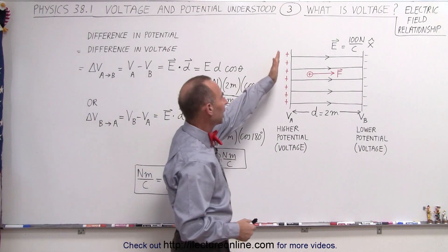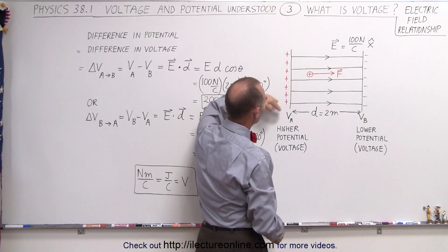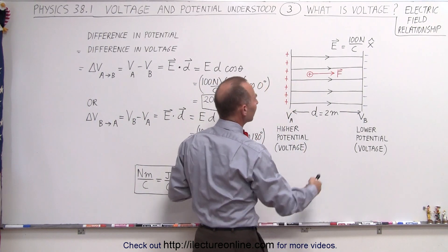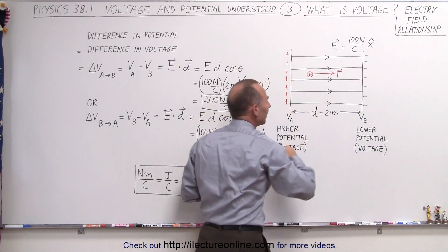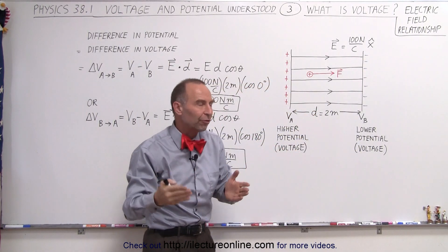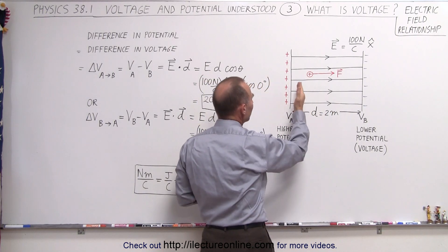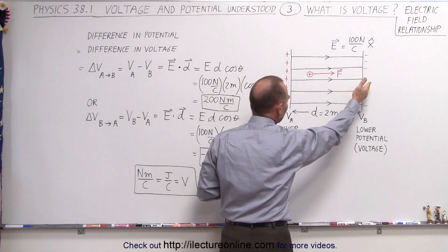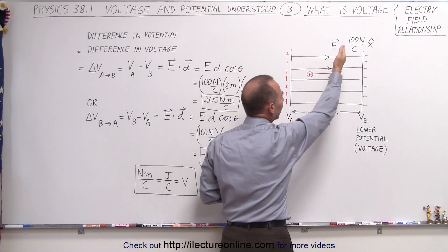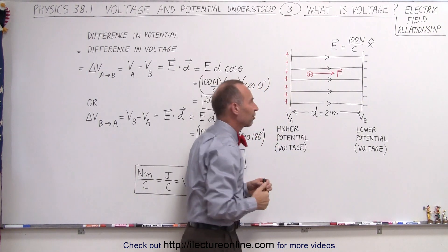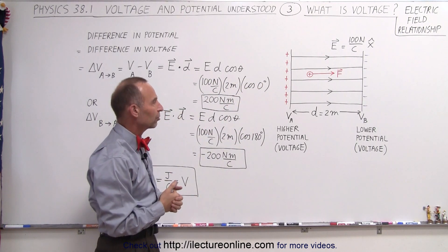Assume that we have two metal plates, one on the left and one on the right. We have some additional positive charge on the left plate and some additional negative charge on the right plate, which will create an electric field between the two plates. The electric field emanates from the positive charge to the negative charge, so we have an electric field directed from left to right — let's say 100 N per Coulomb in the positive X direction.